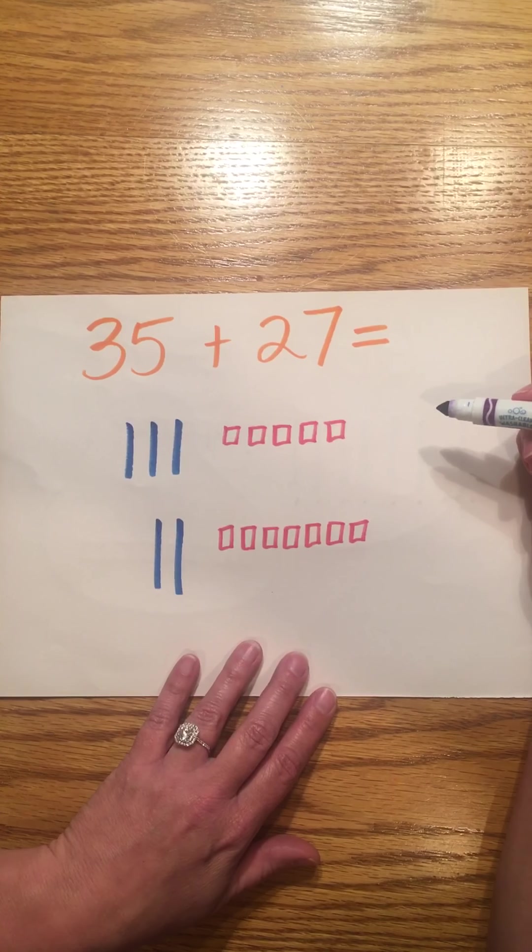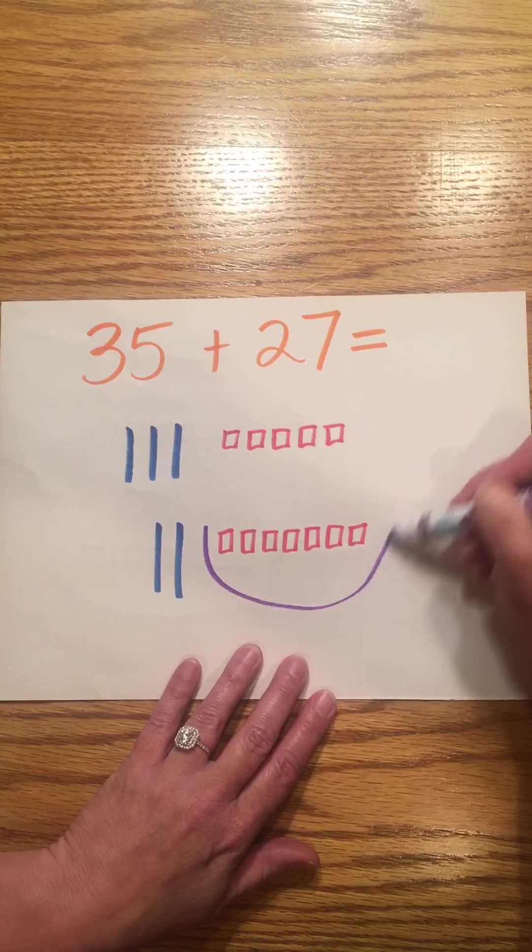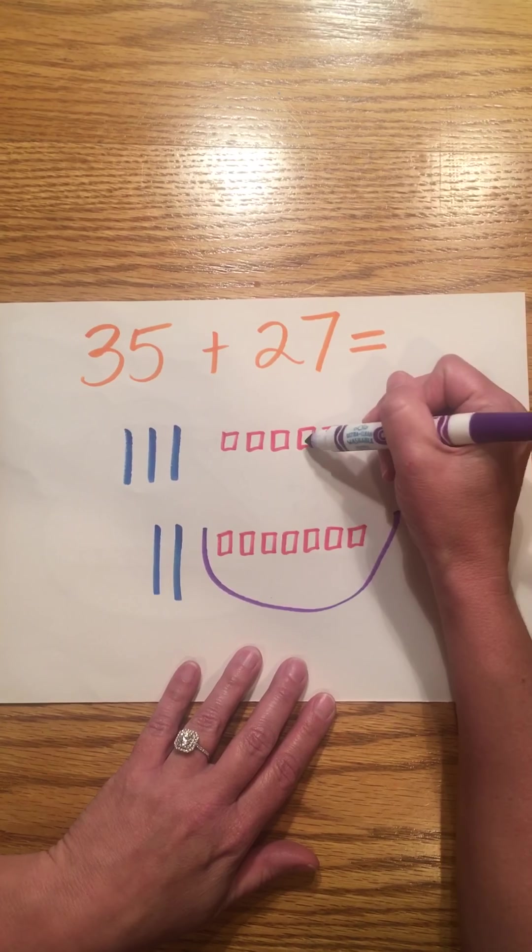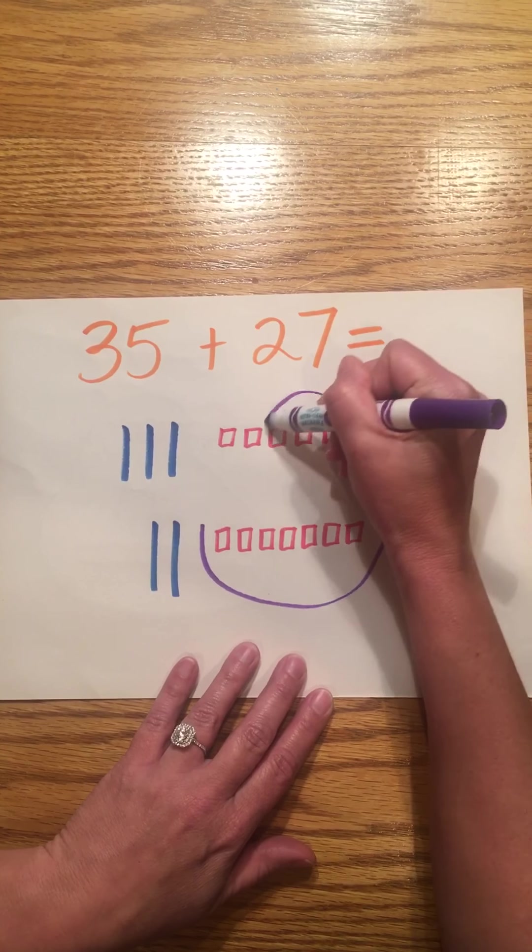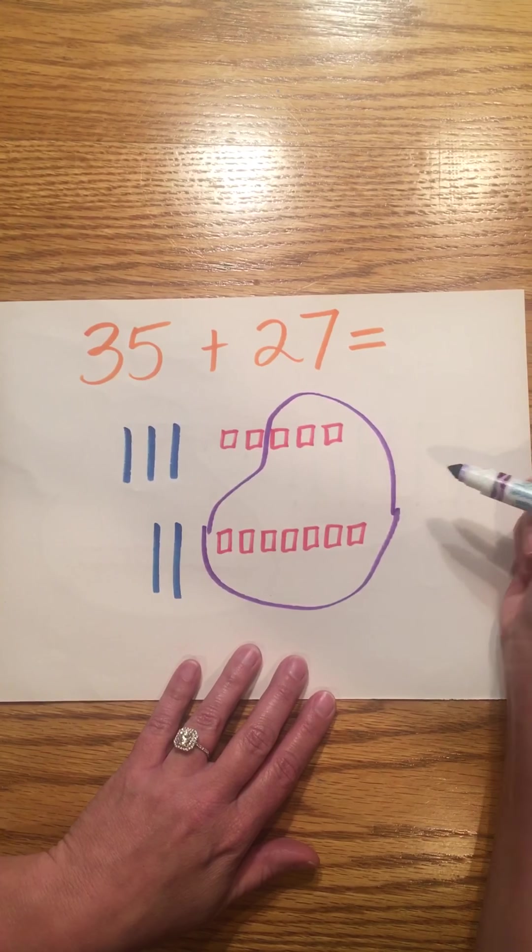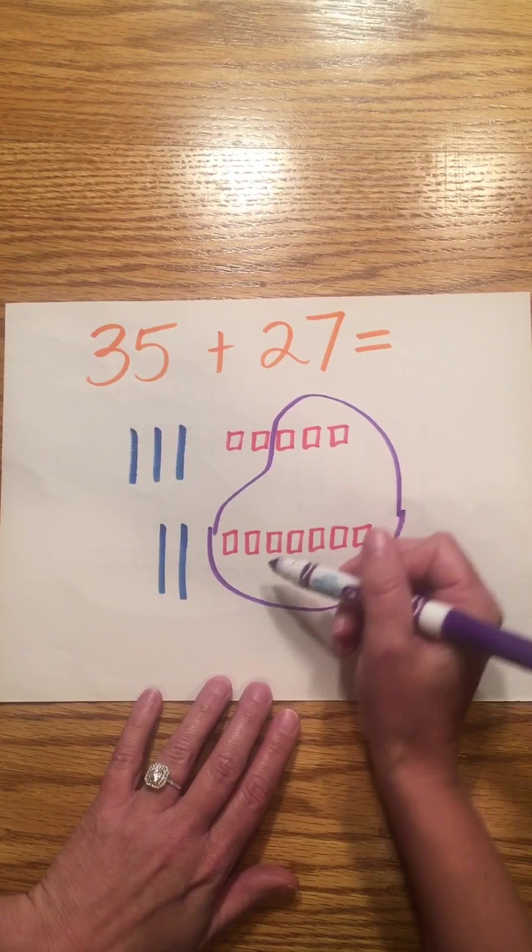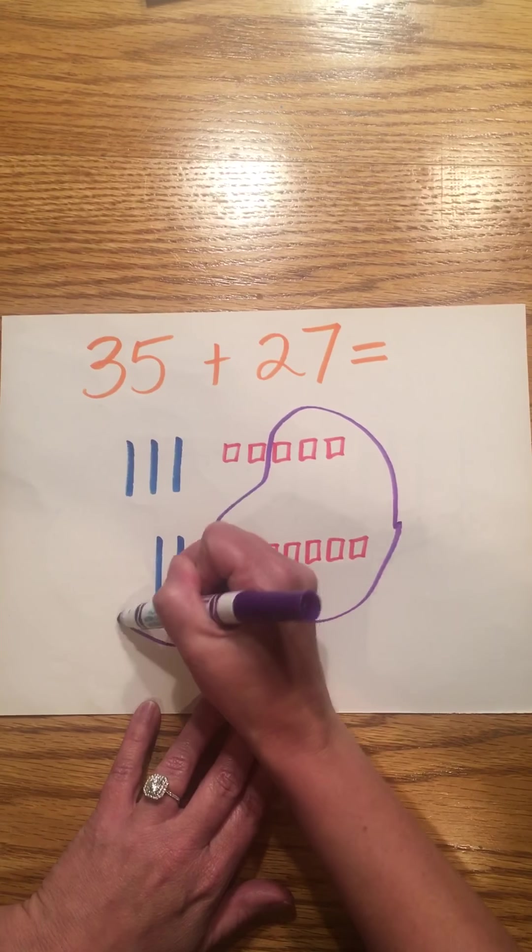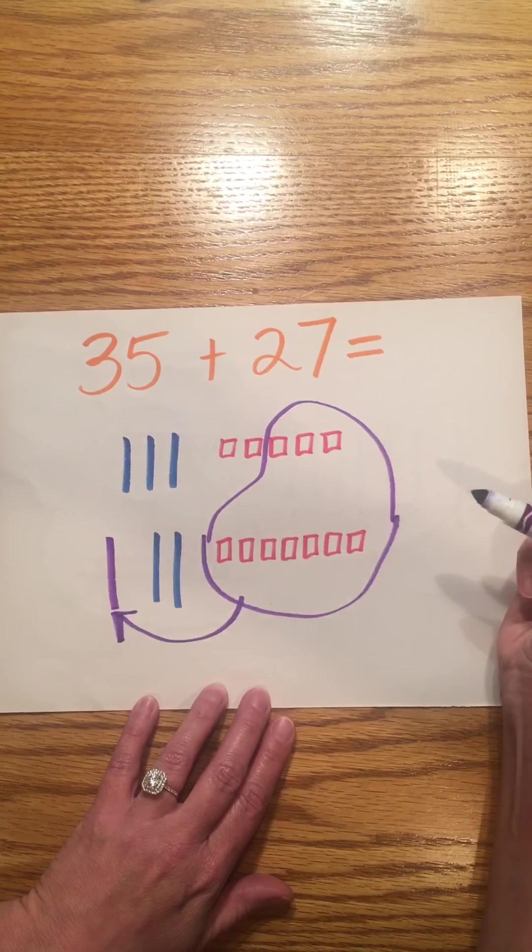So I am going to make a group of ten ones. Here's seven, eight, nine, ten. So here is a group of ten. I'm going to make a fair trade. I will trade ten ones for a ten.